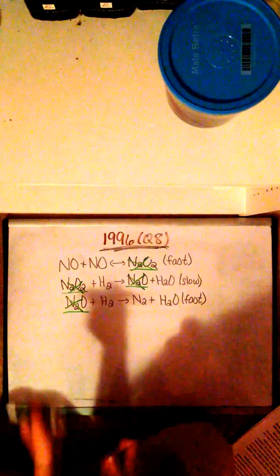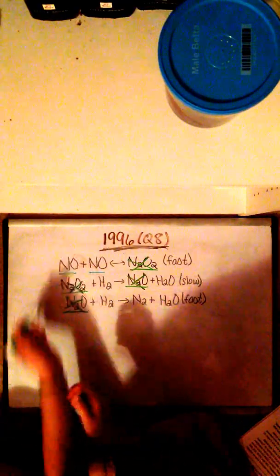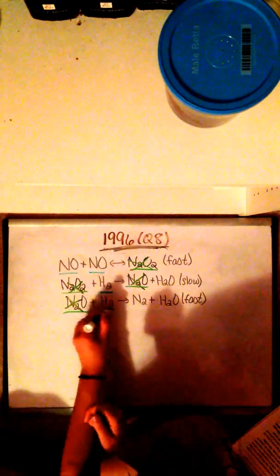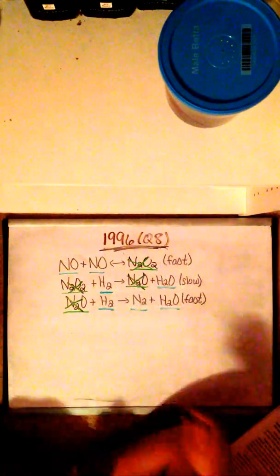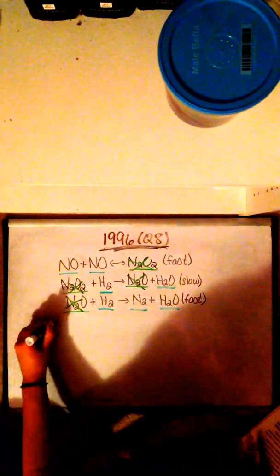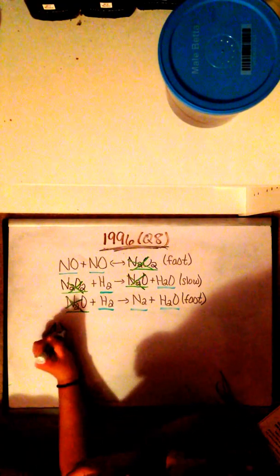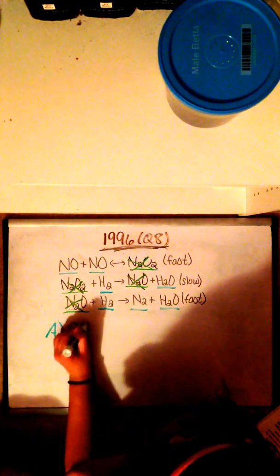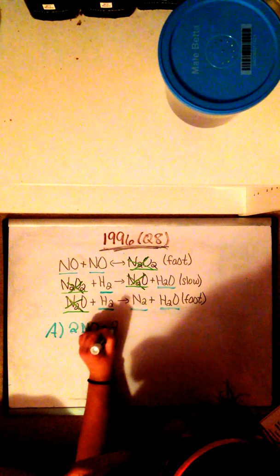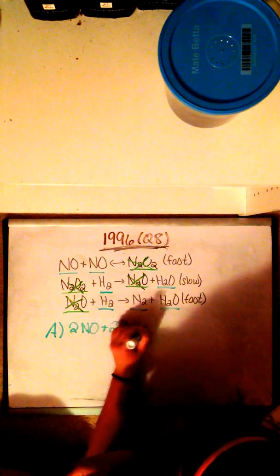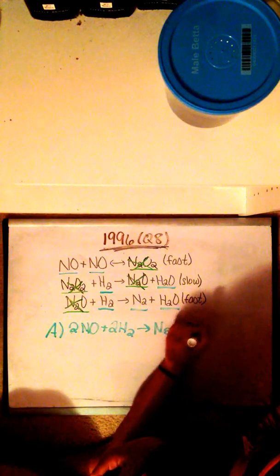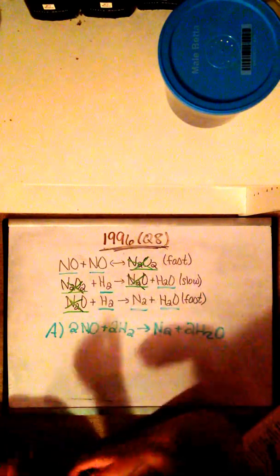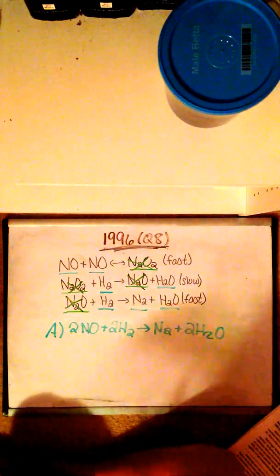That leaves us with two NO molecules, two H2 molecules, two water molecules, and one nitrogen molecule. So when we put that all together, it would be written like this. So that is 2NO plus 2H2 equals N2 and 2H2O. So that is our full balanced equation.